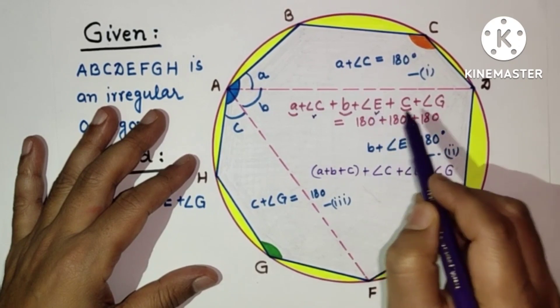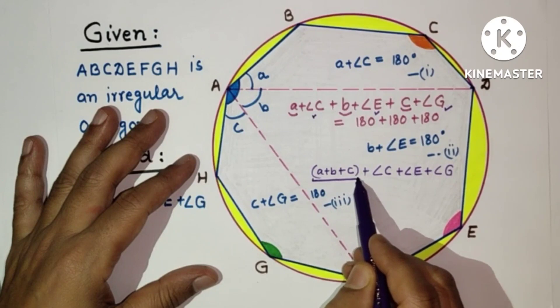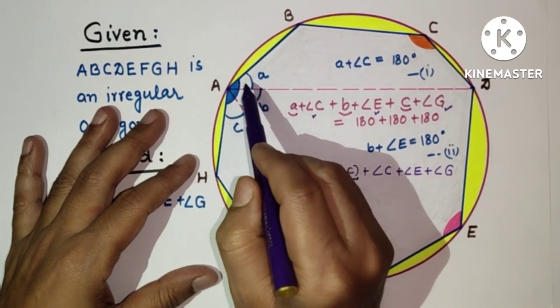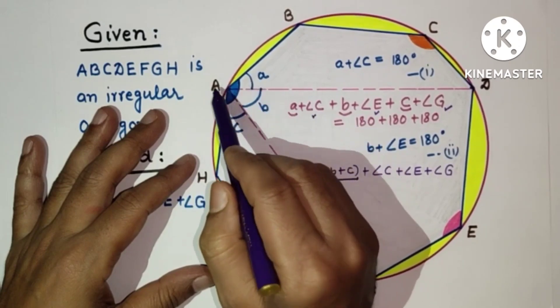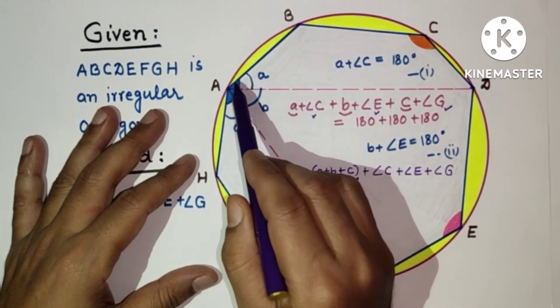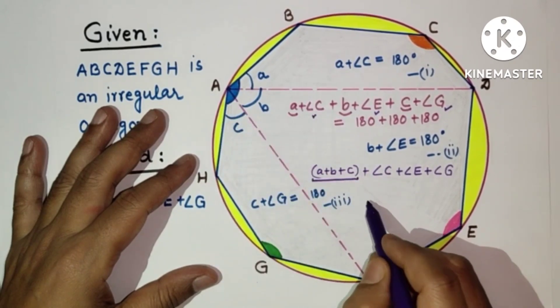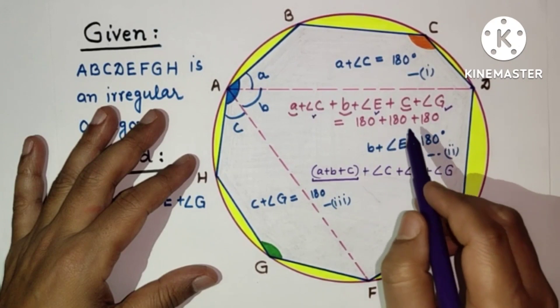Now this a plus b plus c is nothing but angle A. These a, b, and c are parts of angle A, so if we add all these three parts we will get angle A. So this is angle A and the sum of these will be 180 plus 180 plus 180, which is 540.